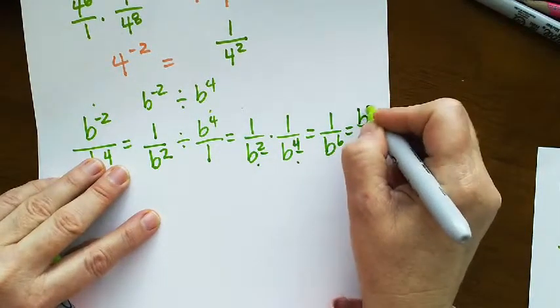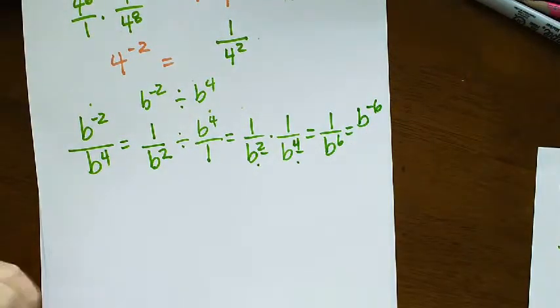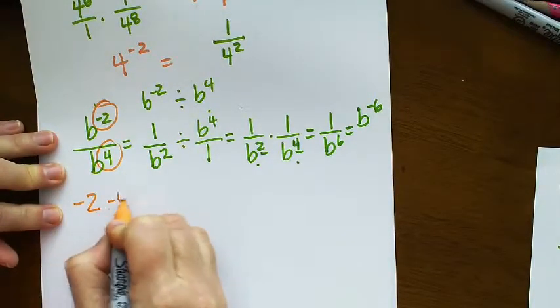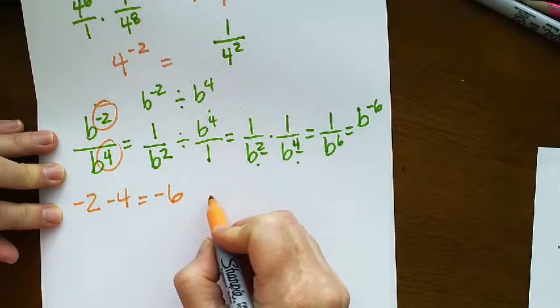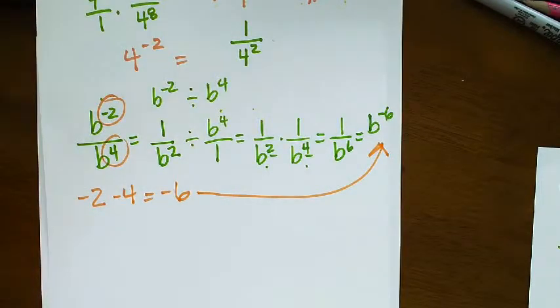Now the shortcut is I'm dividing so I would just subtract the exponents, so negative 2 minus 4 is negative 6, which is going to give me B to the negative 6.